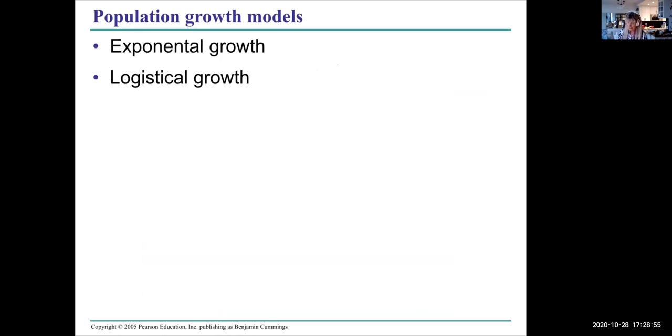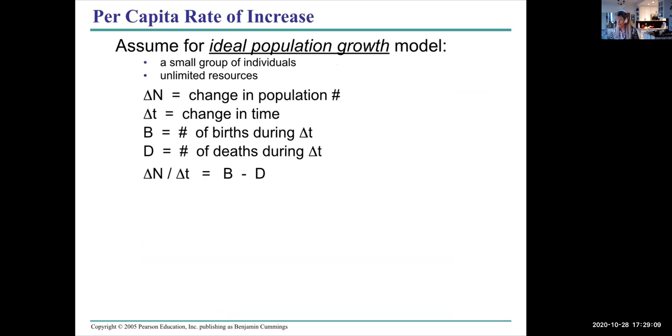Let's look at how populations grow over time. There are two main kinds of population growth: exponential growth and logistical growth. These are growth models. Assuming for an ideal population growth model, we've got a small group of individuals, unlimited resources. Here are some symbols in this equation. The change in population number—you have to establish the timing yourself, but it's usually from one year to the next.